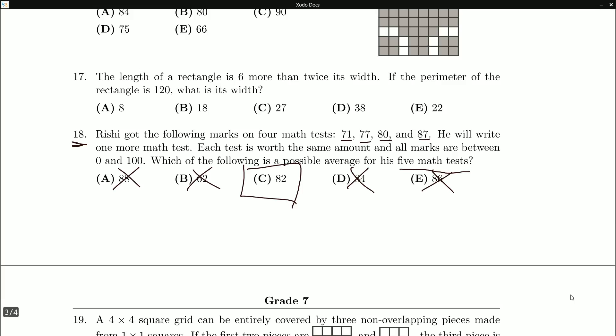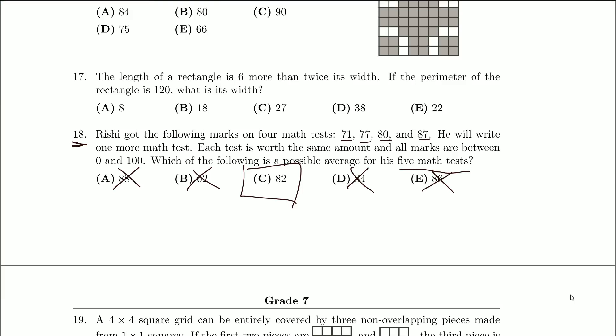Now, you didn't have to do this question with an inequality. You could have taken a look at each of these individual answers and said, well, 88, multiply that by 5, subtract off these other scores. Does that lie between 0 and 100? The reason I didn't do that is because I would have to go backwards for every single one of these until I got numbers between 0 and 100.